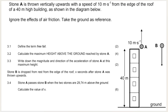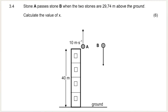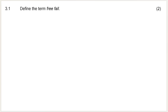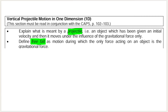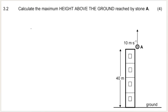Stone A is thrown vertically upwards with a speed of 10 meters per second from the edge of a roof, and the building is 40 meters high. Take the ground as reference. First question: define the term freefall. Freefall is one of two definitions you need to know for this section. Freefall is a motion during which the only force acting on an object is the gravitational force. You must say 'only' and mention gravitational force — it's best to remember definitions word for word.